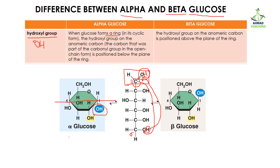If the hydroxyl group in the cyclic form is below the plane, then it is going to be alpha glucose. But if the hydroxyl group of the anomeric carbon is placed above the plane, then it is called beta glucose. So the plane divides the glucose into two halves: if the hydroxyl group is below then it's alpha, if it's above then it's beta. You can remember it as A-B: A is below and B is above.